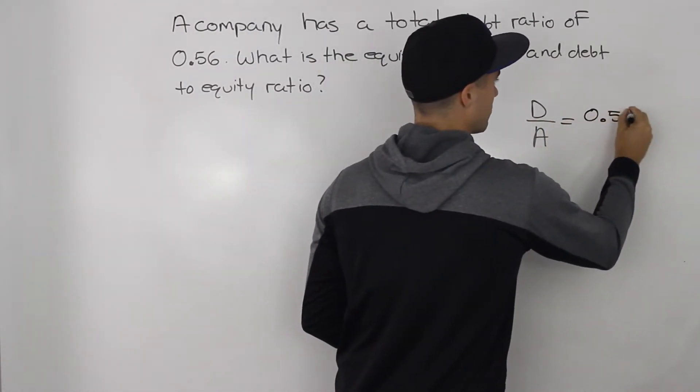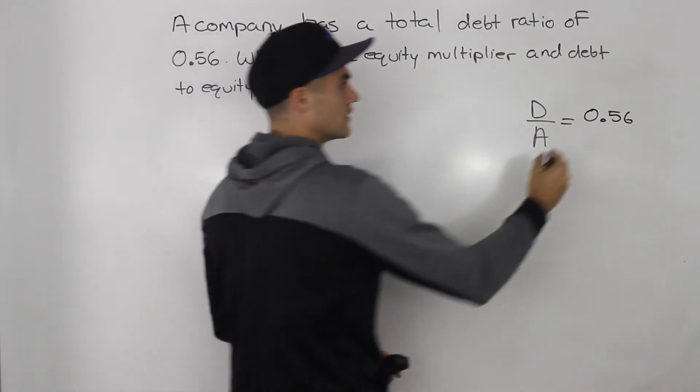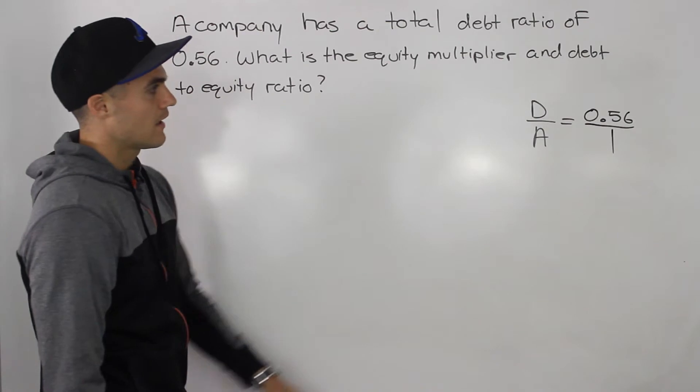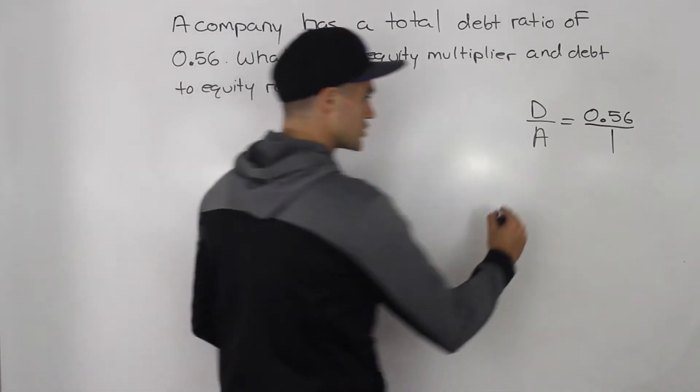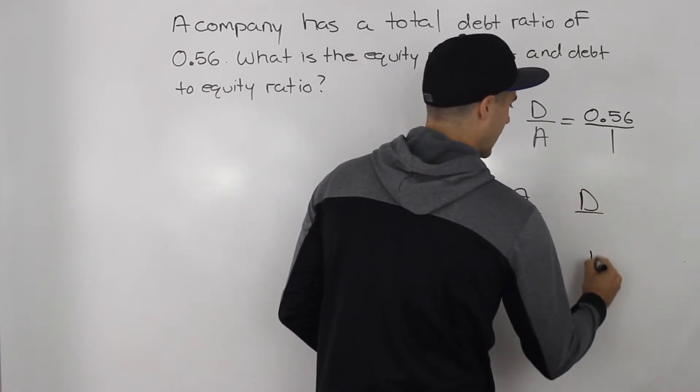And what you want to do, since that 0.56 is a single value, it's not a fraction, you want to always put that over one. And then, from this information, you can make a mini balance sheet where you have assets, debt, and equity.